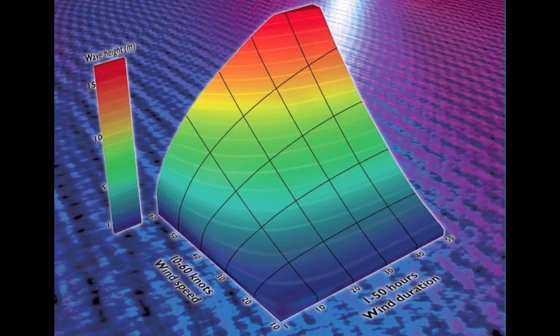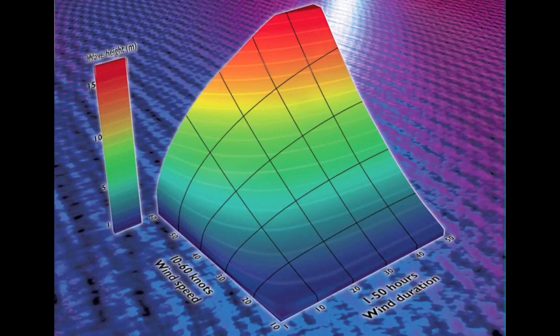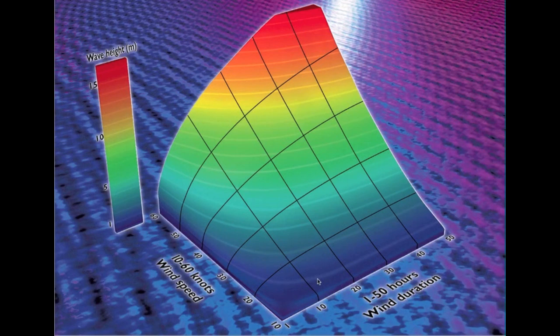This is wind speed here, this is wind duration and these lines are wave height. There's 1 meter, 2, 3, all the way up to about 16 meters. That's a monster wave.